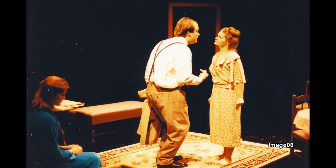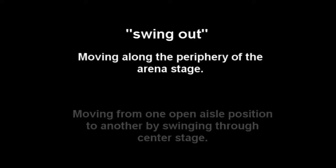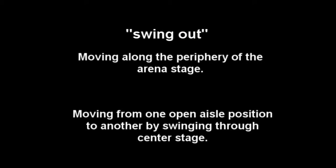The center stage of the arena space is an important traffic area. Actors are either making a curved movement at the periphery of the stage — called a swing-out move — or will move from one aisle to another by curving their move in toward center and then to a different aisle, creating a swing-in move.